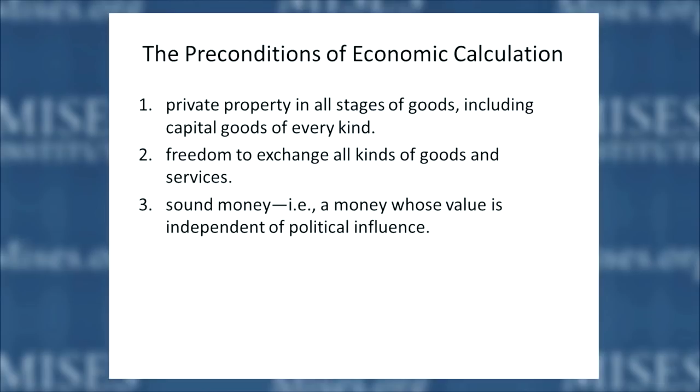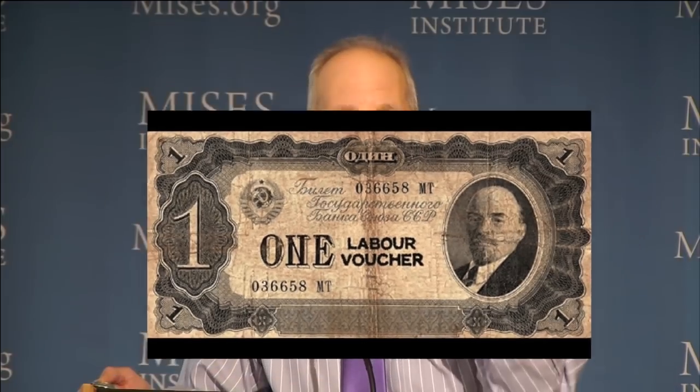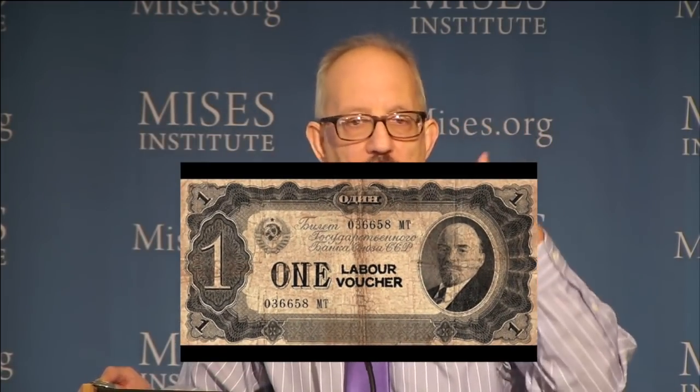Sound money is money whose value doesn't fluctuate wildly — for example, during a hyperinflation — basically money whose value is not influenced or determined by political authorities. Those are the three preconditions. And guess what? Socialism abolishes all of those conditions. There is no private property in the means of production, there is no freedom to exchange, and money is not used. Workers are paid rubles, but the rubles are really vouchers to buy consumer goods. There are no commodities markets, stock markets, people trading businesses, and so on. Money is not used for that purpose — so it's not really money.